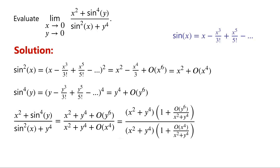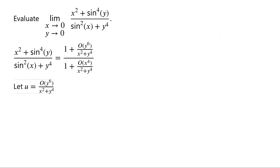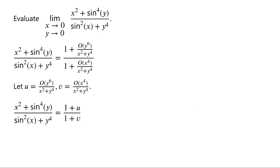Next, we factor out x squared plus y to the power of 4 from both the numerator and the denominator. Then x squared plus y to the power of 4 in the numerator and that in the denominator cancel. So the function is now equal to 1 plus big O of y to the power of 6 over x squared plus y to the power of 4, over 1 plus big O of x to the power of 4 over x squared plus y to the power of 4. We let u equal big O of y to the power of 6 over x squared plus y to the power of 4, and v equal big O of x to the power of 4 over x squared plus y to the power of 4.